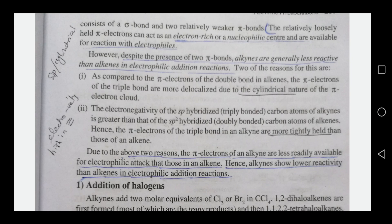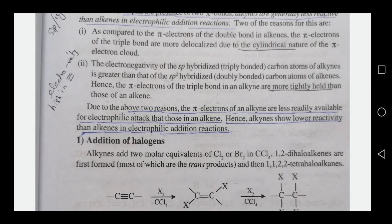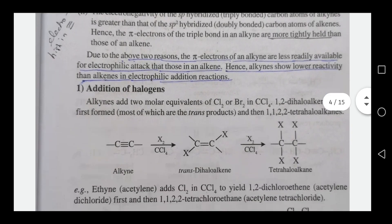Now the first electrophilic addition reaction is the addition of halogens. This involves two molar equivalents of chlorine or bromine in CCl4. When we add halogens — bromine in CCl4 or chlorine in CCl4 — the first product formed is a trans-dihaloalkene.